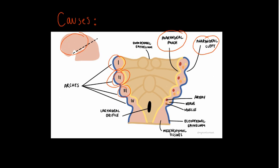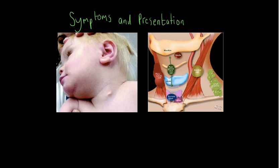The remaining 5% of cysts arise from the regions of the first, third, and fourth arches. In terms of presentation, a branchial cleft cyst usually presents as a painless, mobile, and fluctuant mass located along the anterior border of the sternocleidomastoid muscle, as seen in the chart we looked at earlier.